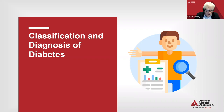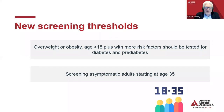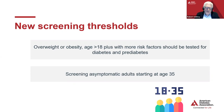Let's start with the classification and diagnosis of diabetes. Here, we made an important change with new screening thresholds. For individuals that are overweight or obese, over the age of 18, with risk factors, those individuals should be tested for both diabetes and prediabetes through the usual measures.